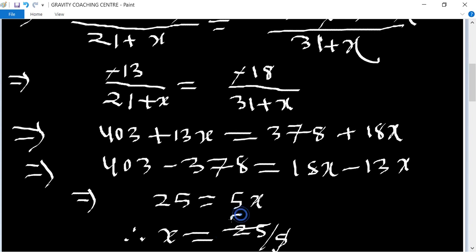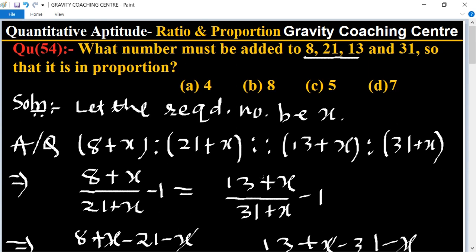5 times 5 is 25, so x equals 5 which is the required answer. Option C is the right answer.